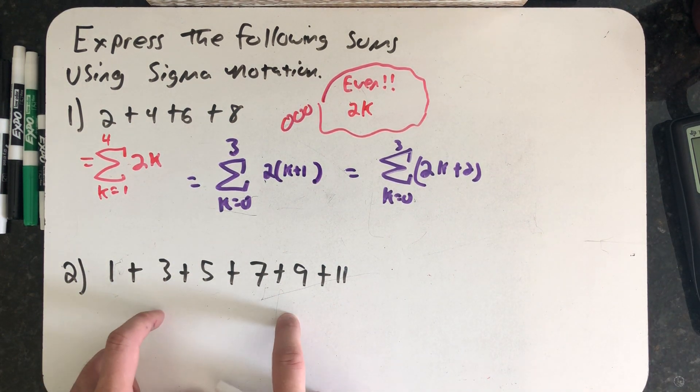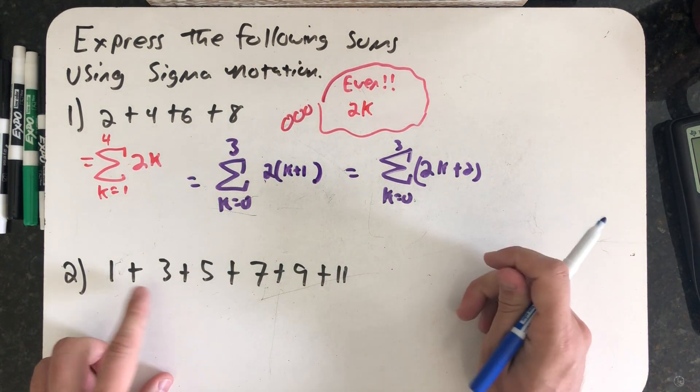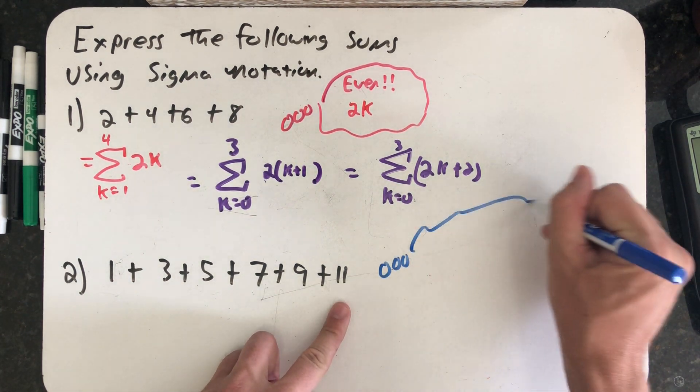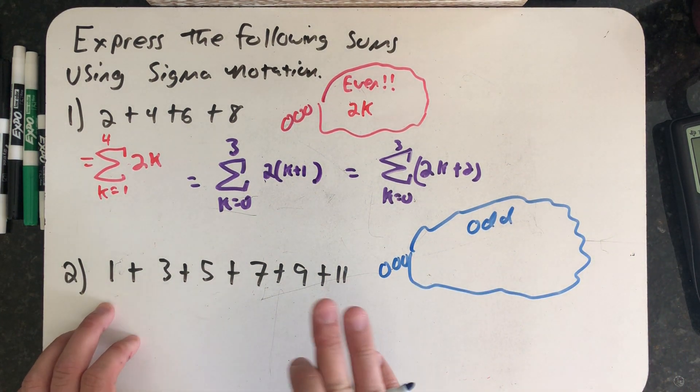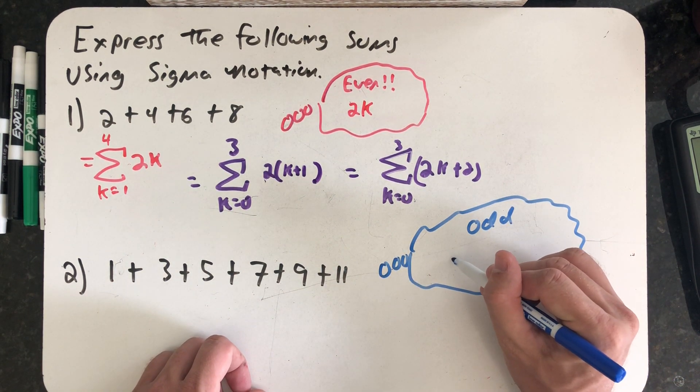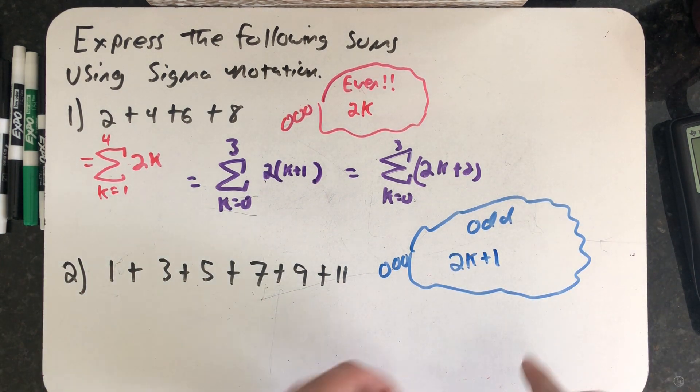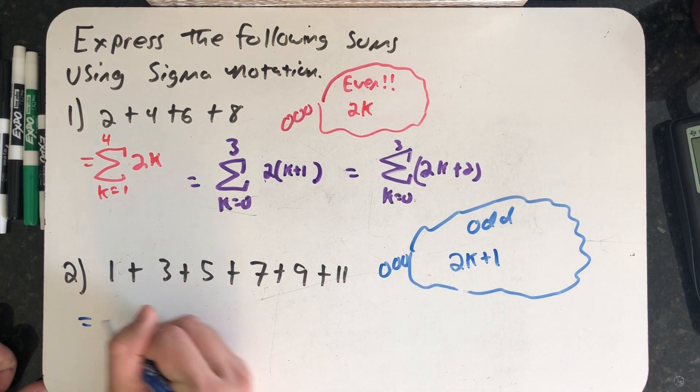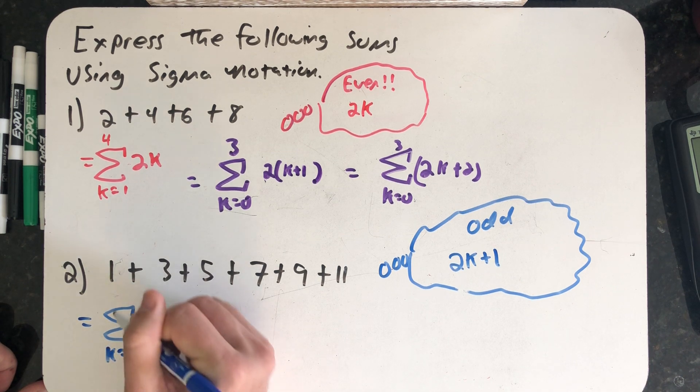Let's see if we can write this sum down in sigma notation two different ways. So 1 plus 3 plus 5 plus 7 plus 9 plus 11. I'm thinking that these numbers are odd. Then I'm summing together the first so many odd numbers and need to think about what an odd number is.